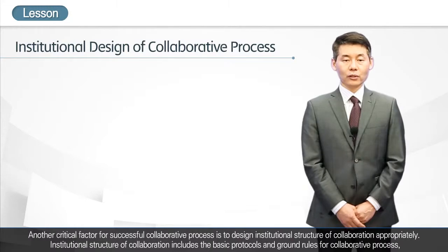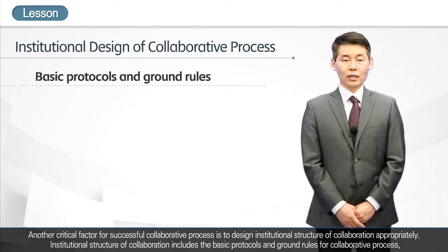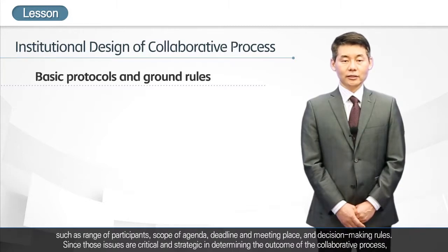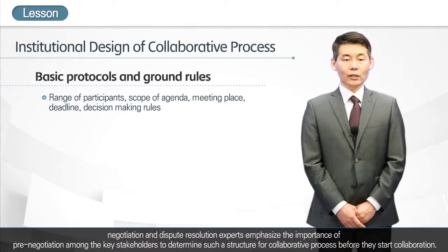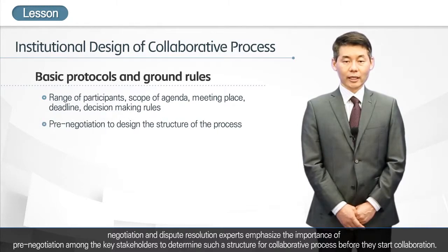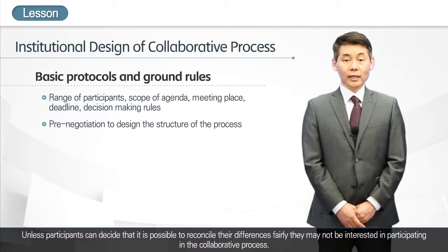Another critical factor for successful collaborative process is to design the institutional structure of collaboration appropriately. This includes the basic protocols and ground rules for collaborative process, such as range of participants, scope of expectations, scope of agenda, deadline and meeting place, and decision-making rules. Negotiation and dispute resolution experts emphasize the importance of pre-negotiation among key stakeholders to determine such structure before collaboration begins. Unless participants can decide that it is possible to reconcile differences fairly, they may not be interested in participating.